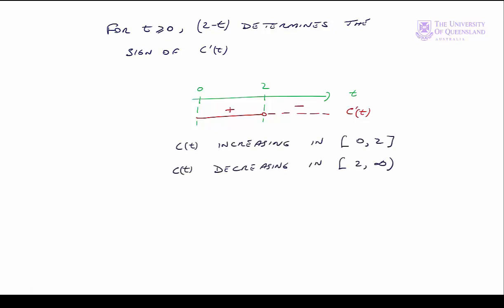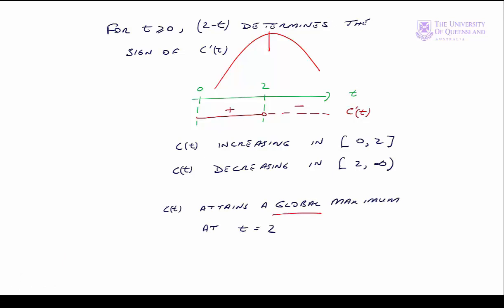So we have our function c(t) increasing in the interval 0 to 2 and decreasing in the interval 2 to infinity. If 0 to infinity is the entire domain of our function, then we conclude that the function has a maximum at point t equals 2. We know it's a global maximum because that's the whole domain of our function from 0 to plus infinity.